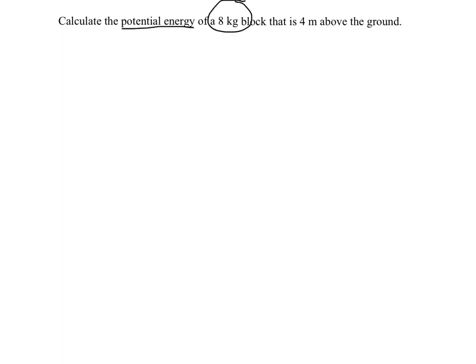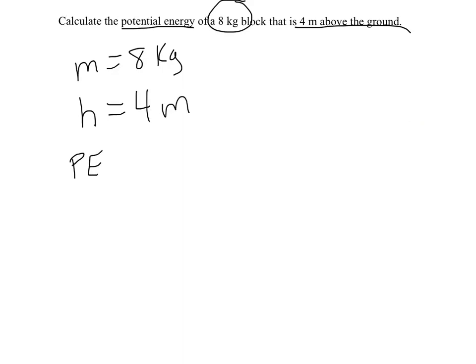Similar problem, except now we're asked to find potential energy. So we're going to write down what we know. It's an 8-kilogram block, so the mass is 8 kilograms. It is 4 meters above the ground, so we're going to say the height is 4 meters. And we're looking for potential energy.